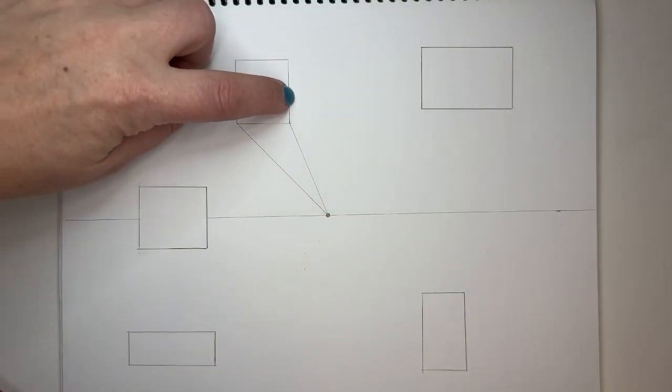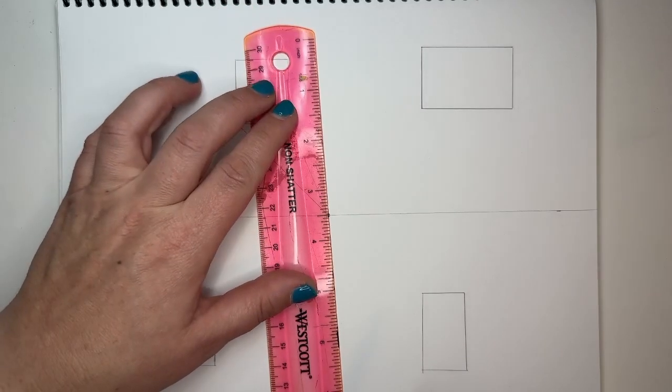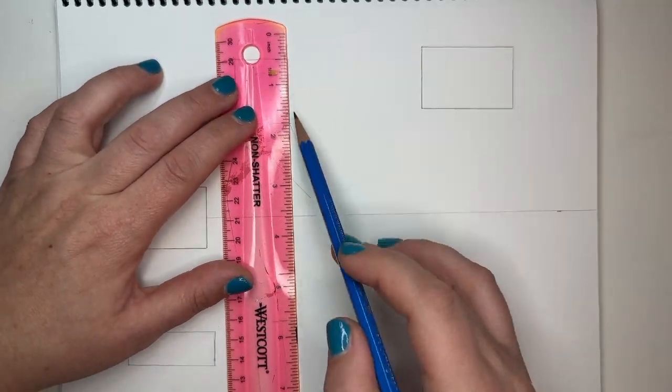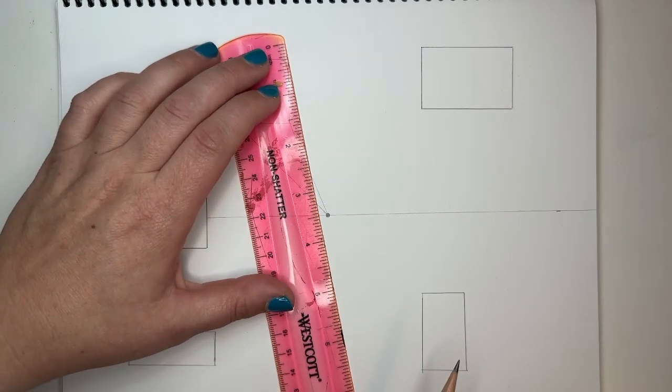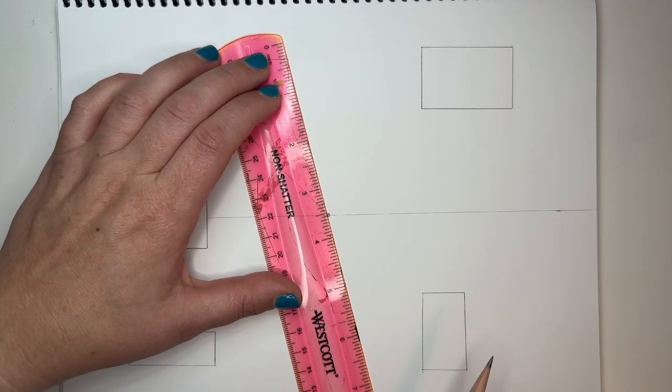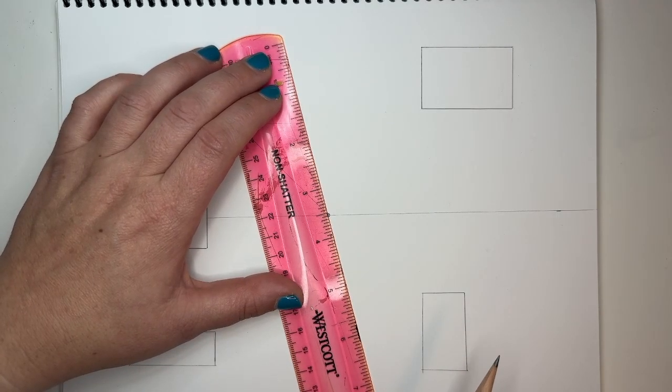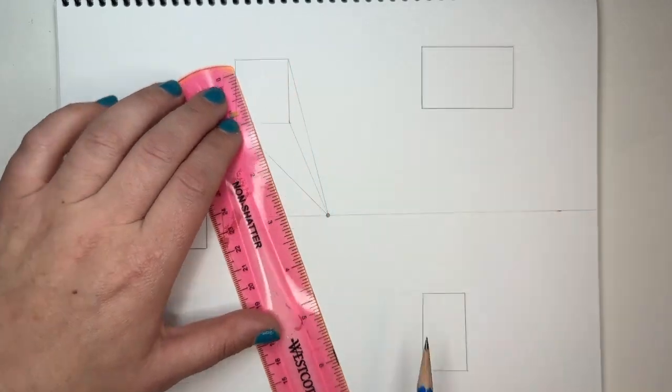Now this one, because it's a little to the left of the vanishing point, right, if I hold my ruler up there, you can see there's some space between this edge and the vanishing point. But it's going to be pretty slim because of how close it is to the vanishing point. So that's why it's good to just try different areas on your page so you can see what that looks like.